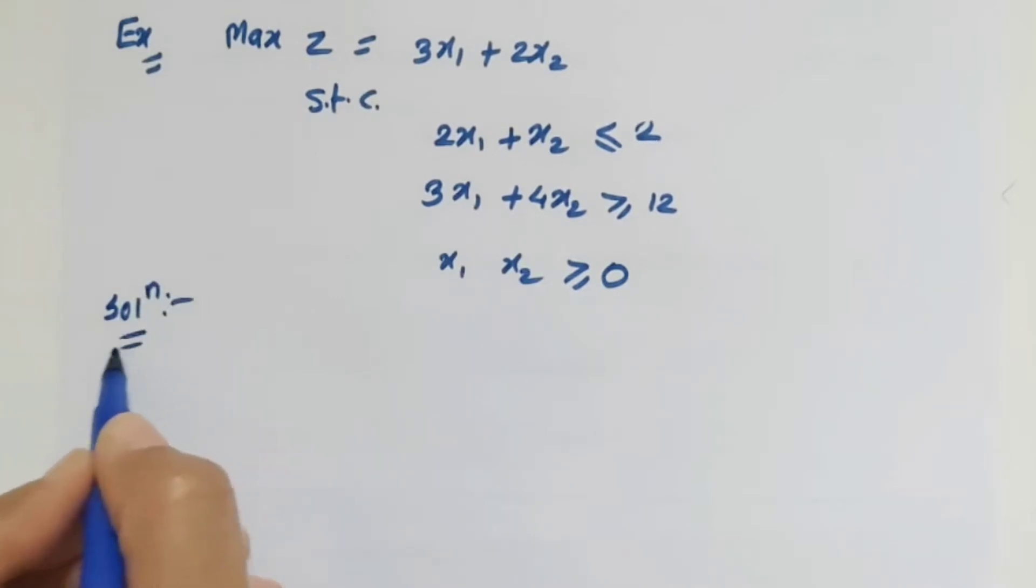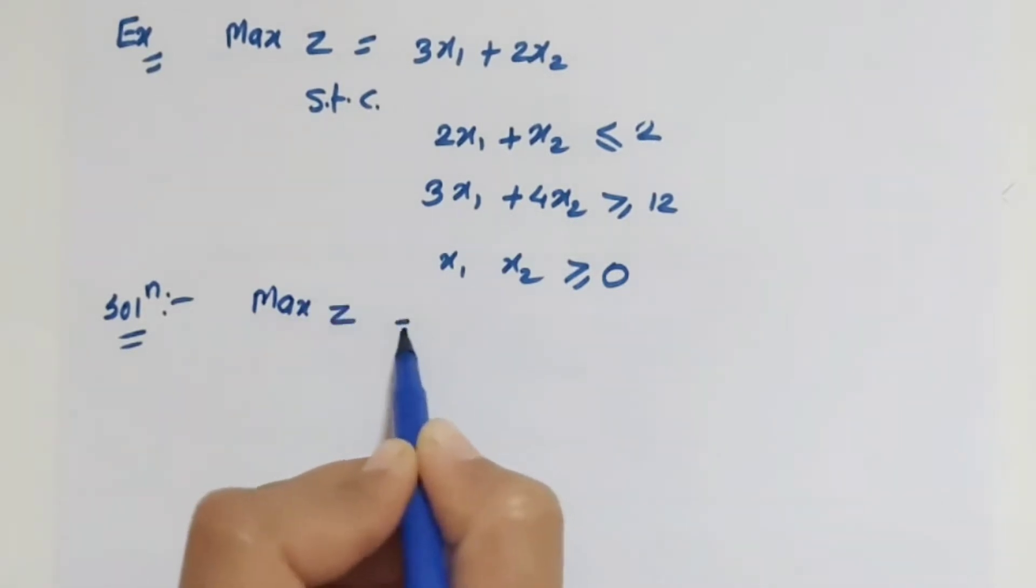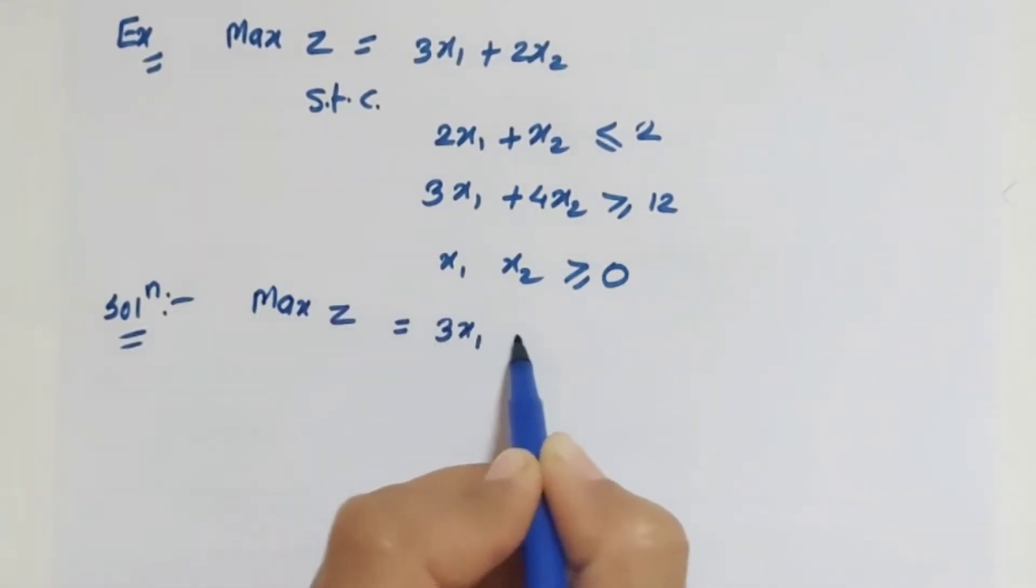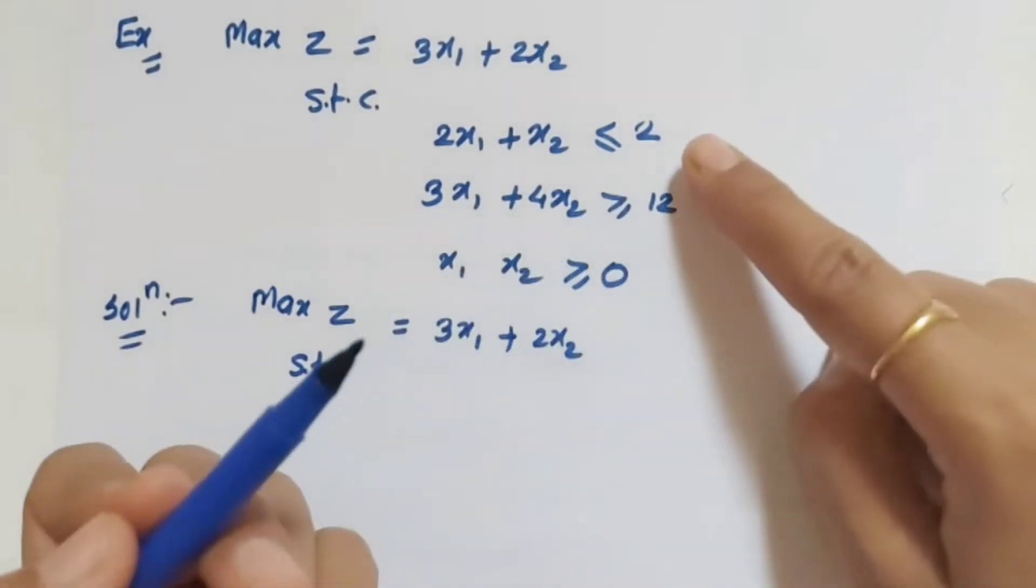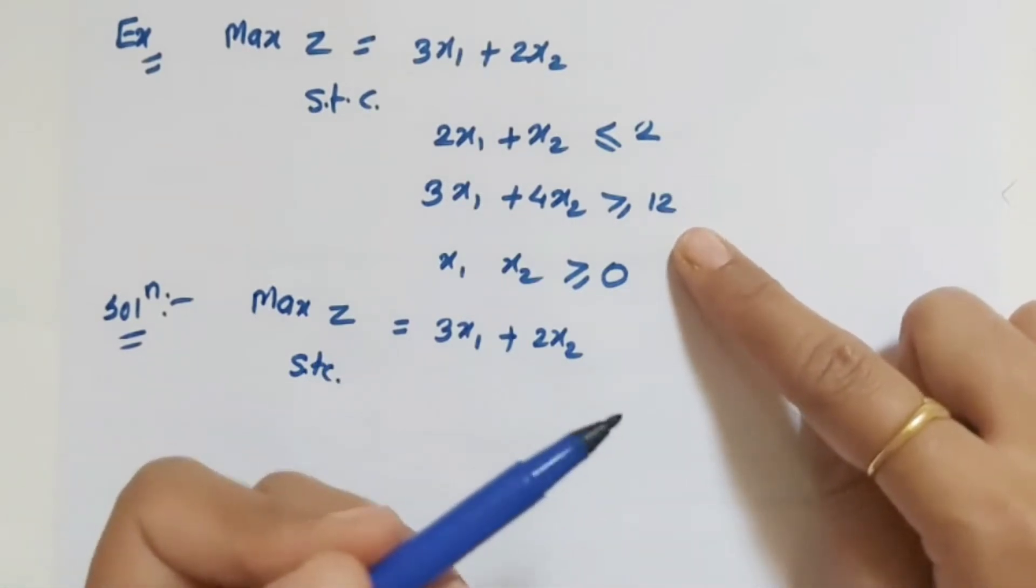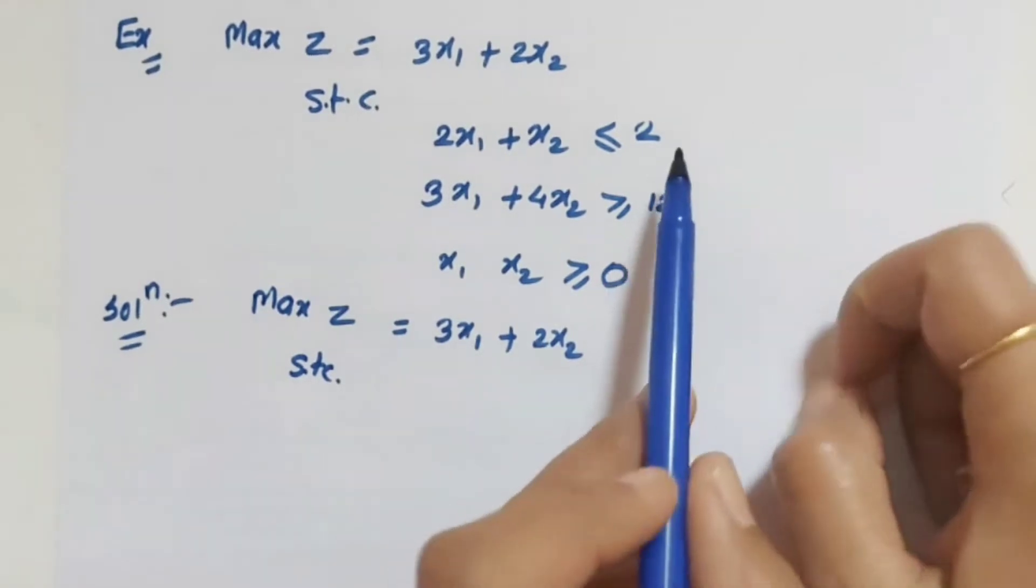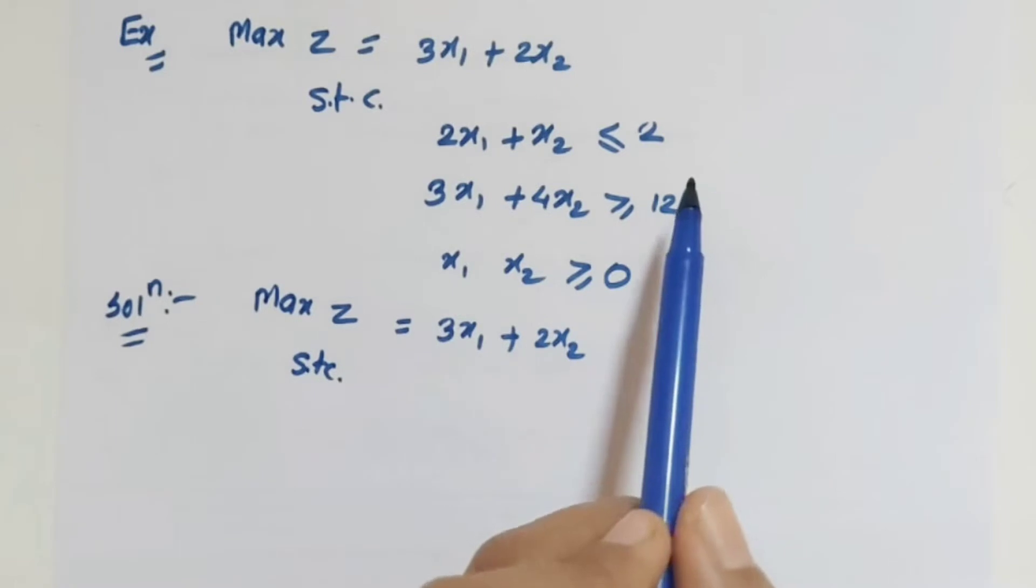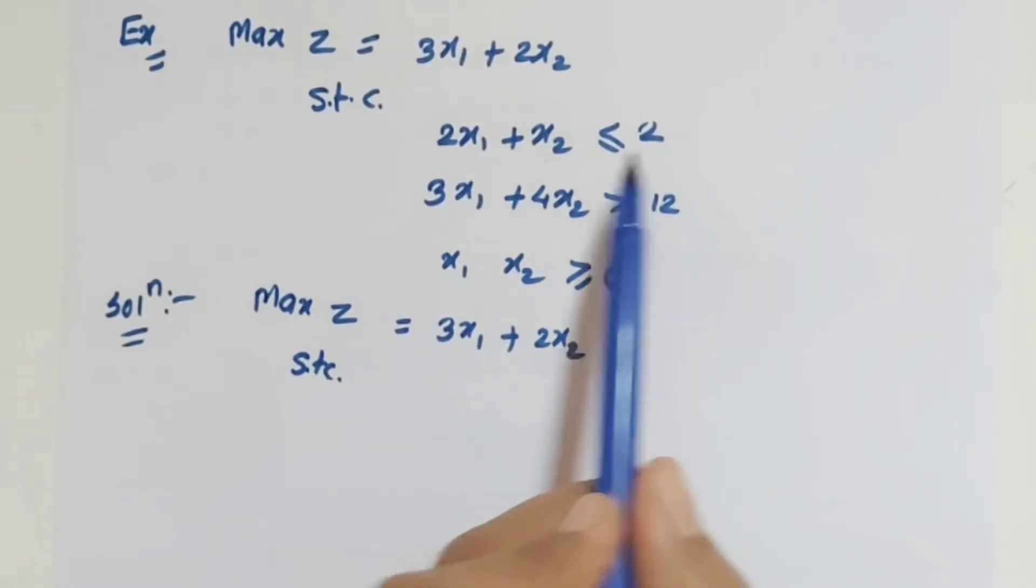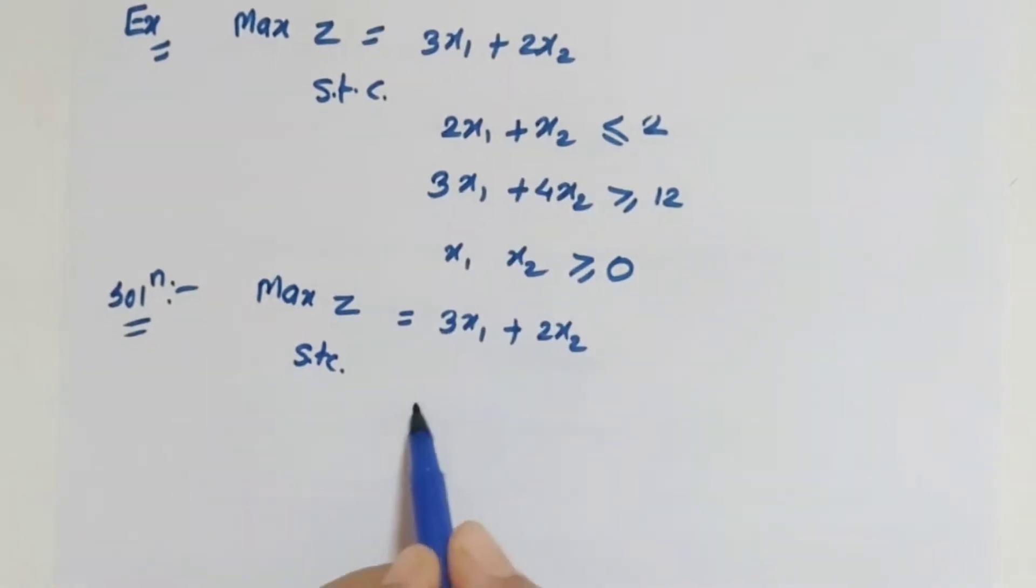So here we have to convert this LPP into standard form. The objective maximize is already given, so it is 3x1 plus 2x2 as is. Subject to the constraints, convert it into equality form. First check whether the right side is positive or not. If it is not positive, make the right side positive first. But here it is already positive, so if it is, then convert into equality.